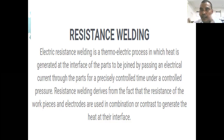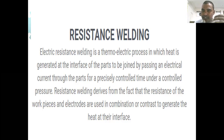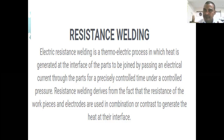H equal to I square RT. H is the total heat generated in the work, and the unit is Joule — for example, in spot welding where a thin sheet is joined, H tells us how much heat is generated. I is the electric current passing through the joint. R is the resistance of the joint, and T is the time in seconds for which the electric current passes through the joint.